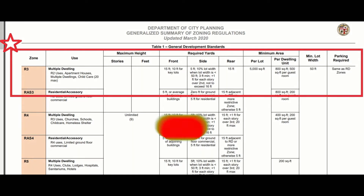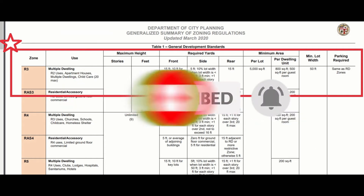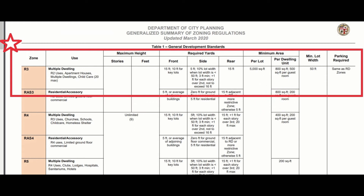A few other things to look at when searching for R3 property: the minimum lot size per the city is 5,000 square feet. Regarding setback requirements — which apply to most zones other than C2 and C1 — you have a rear and front setback of around 15 feet, and in some cases depending on location, a 25-foot setback. Side setbacks are usually around five feet, which is typical for most zones.